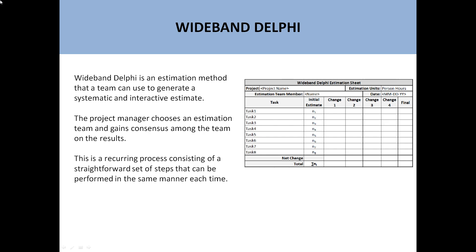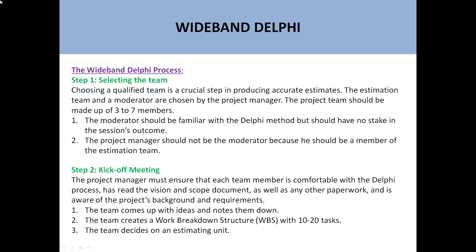In this technique, the project manager chooses an estimation team and gains consensus among the teams on the result. This is a recurring process consisting of a straightforward set of steps. Basically, we divide the project into simple tasks and all team members give their feedback, and with their consensus we reach a point agreed upon by all team members.